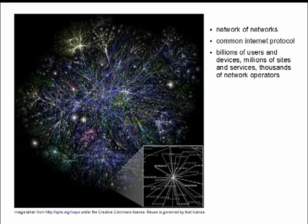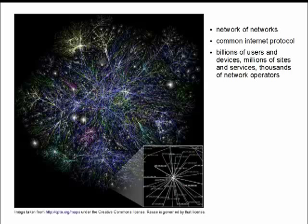There are billions of users and devices on this global network at millions of sites: homes, businesses, retail outlets, mobile devices, and there are thousands of network operators. One of the really remarkable aspects of the Internet is that it was not designed from the top down and it's not controlled by a central agency, but rather is a federation of thousands of network operators — some of them service providers, others communications companies — working cooperatively because of the standards built around the Internet Protocol.